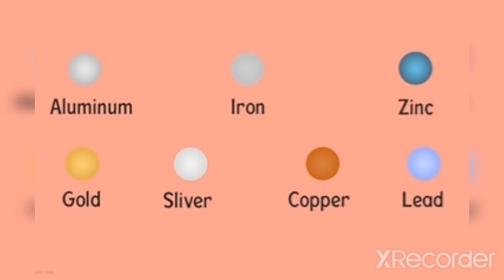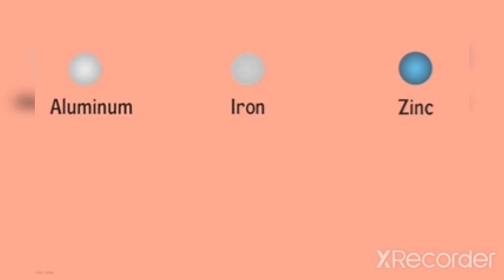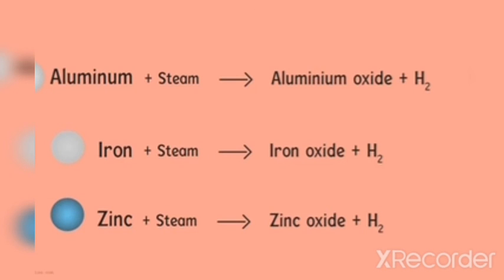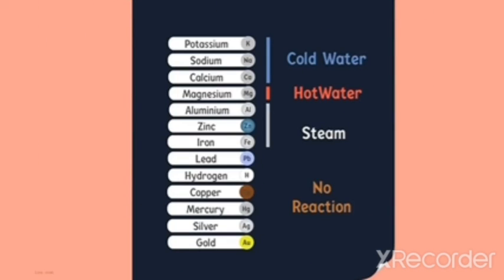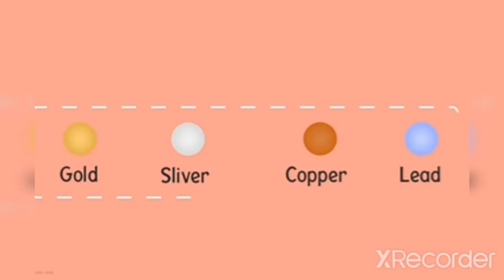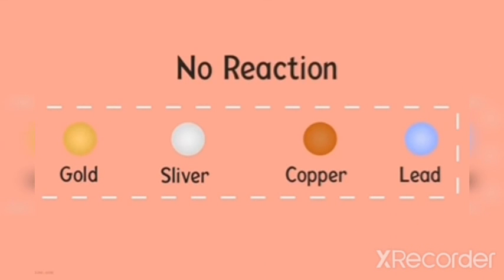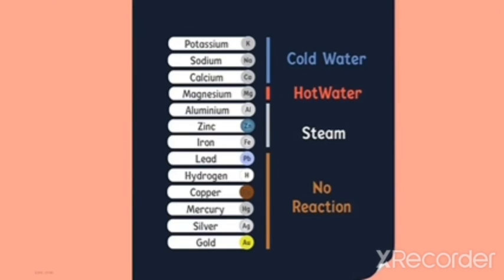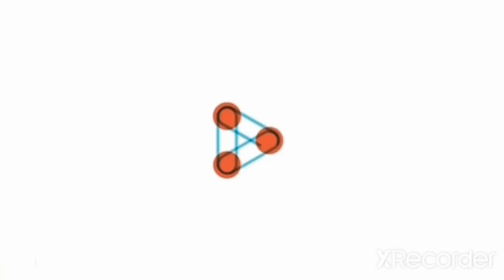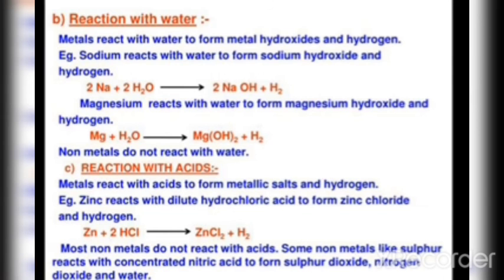The remaining metals don't react with hot or cold water. Aluminium, iron, and zinc react with steam to form metal oxide and hydrogen. Metals like lead, copper, silver, and gold don't react with water at all. That was the video showing how metals and nonmetals react with water. In our next class we will discuss the reaction with acids and bases.